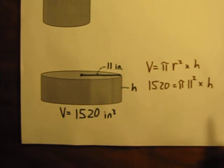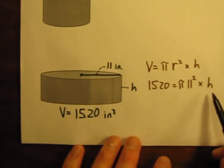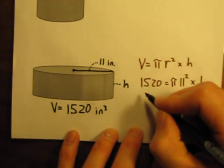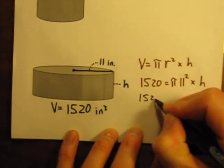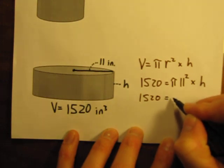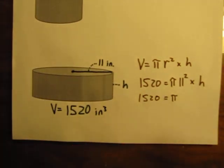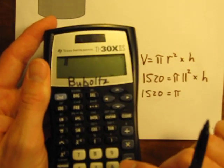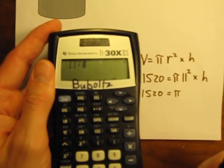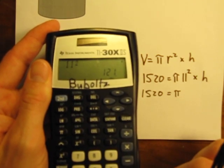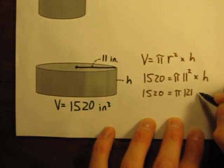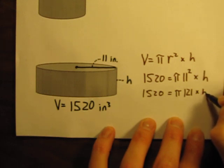So we want to solve for the height. First thing, let's get rid of the exponent. At this point, you can solve for the height in multiple ways. I'm going to start by getting rid of the exponent. So 1520 is equal to pi times what is 11 squared? You might remember that without turning into a calculator. If you need a calculator, that's okay too. 11 squared is 121.